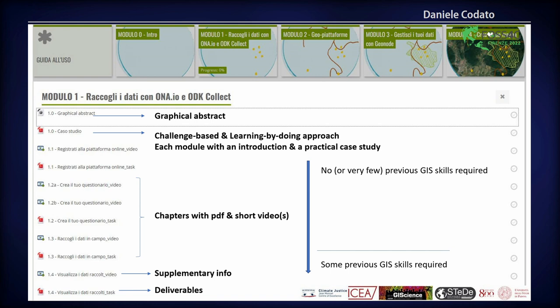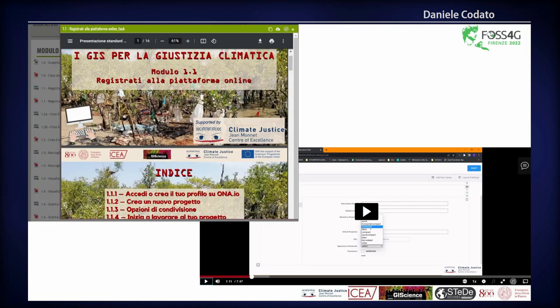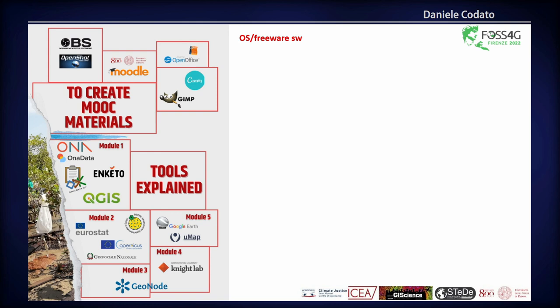Each module has a graphical abstract and is based on a challenge-based, learning-by-doing approach. There will be a practical case study that a group of citizens must prepare. Different chapters include PDFs and short videos — maximum six to ten minutes each, because attention typically drops after ten to fifteen minutes. There is also supplementary information and deliverables by students.